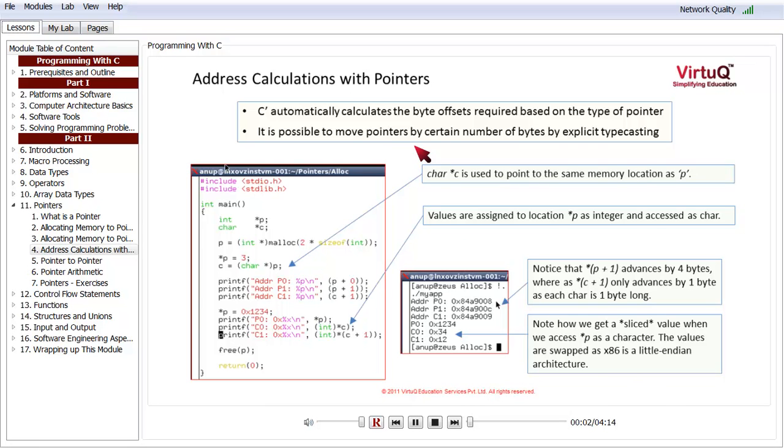Let us try to get a little bit more understanding of address calculation with pointers. What the compiler is doing is that it is automatically calculating the byte offsets required based on the type of the pointer whenever we're trying to do a pointer access. It is using the C semantics for doing this.